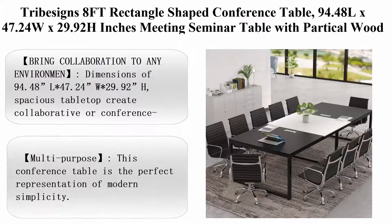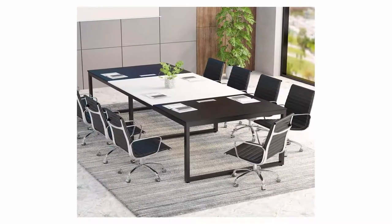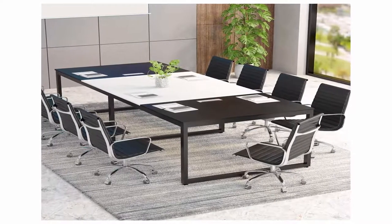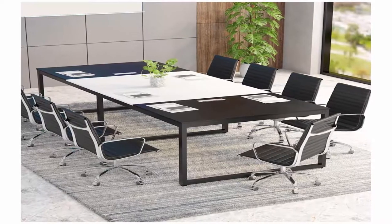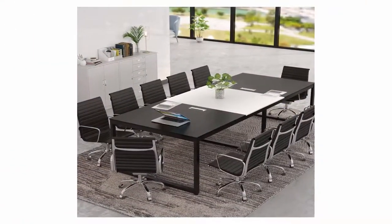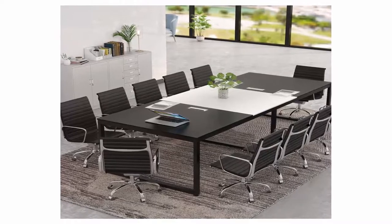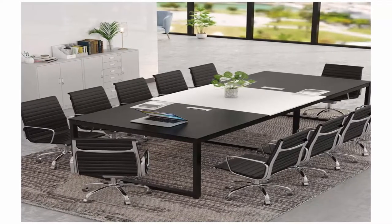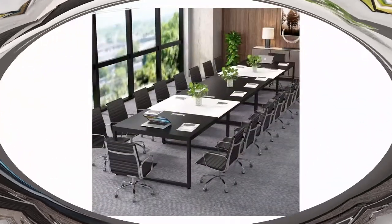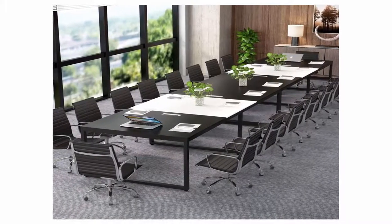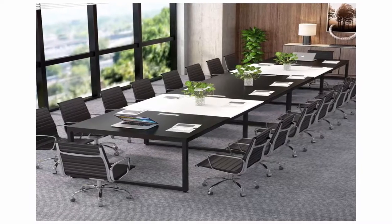Tribusins 8 feet Rectangle shaped conference table. 94.48 L x 47.24 W x 29.92 H inches. Meeting seminar table with particle wood table top and metal frame. Black. Material: wood, Steel. Item dimensions: 94 x 47 x 29 inches. Shape: rectangle. Item weight: 136 pounds. Brand: Tribusins. About this item: Bring collaboration to any environment. Dimensions of 94.48 inches L, 47.24 W, 29.92 H. Spacious tabletop. Create collaborative or conference style workspaces easily in any work, training, or learning environment. Nice seating for 8 to 10 people.